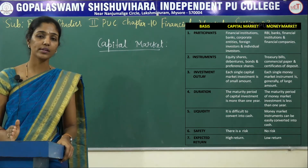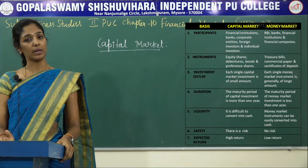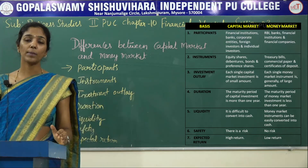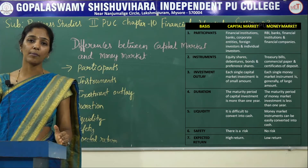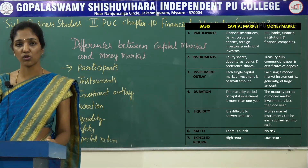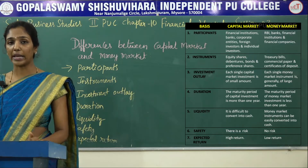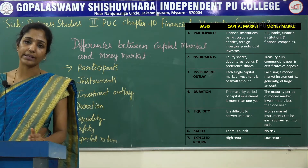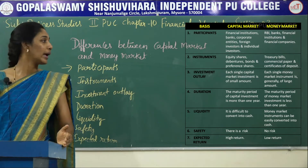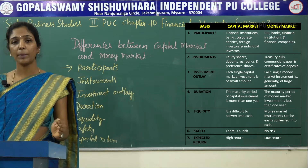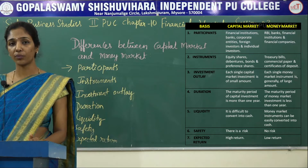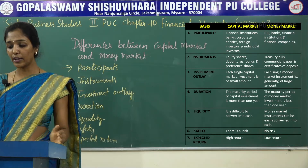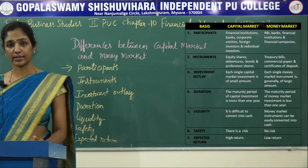Now let's know the differences between capital market and money market. The first point is participants. The participants in the capital market are banks, financial institutions, individual investors, industrial sectors, and government. Whereas in the money market, the participants are the Reserve Bank of India, financial institutions, individual investors, etc.